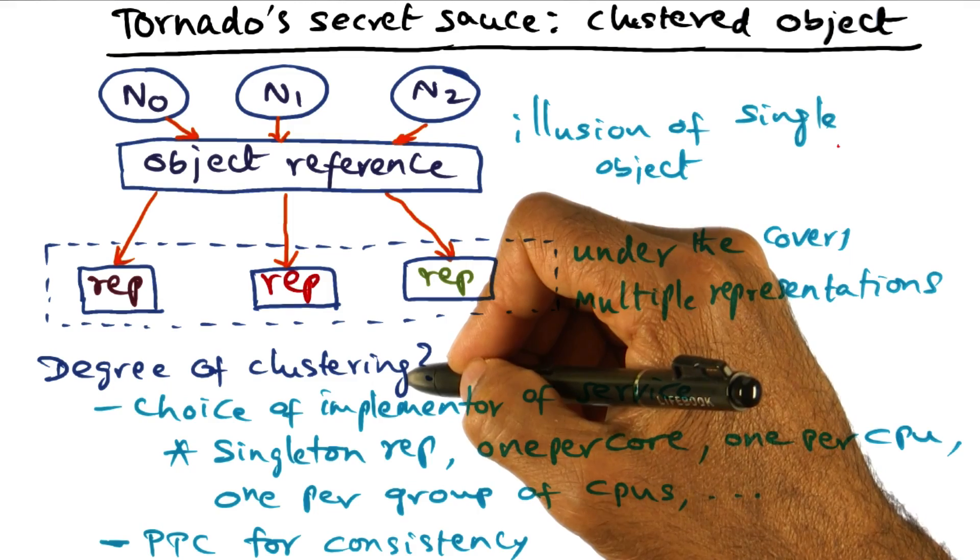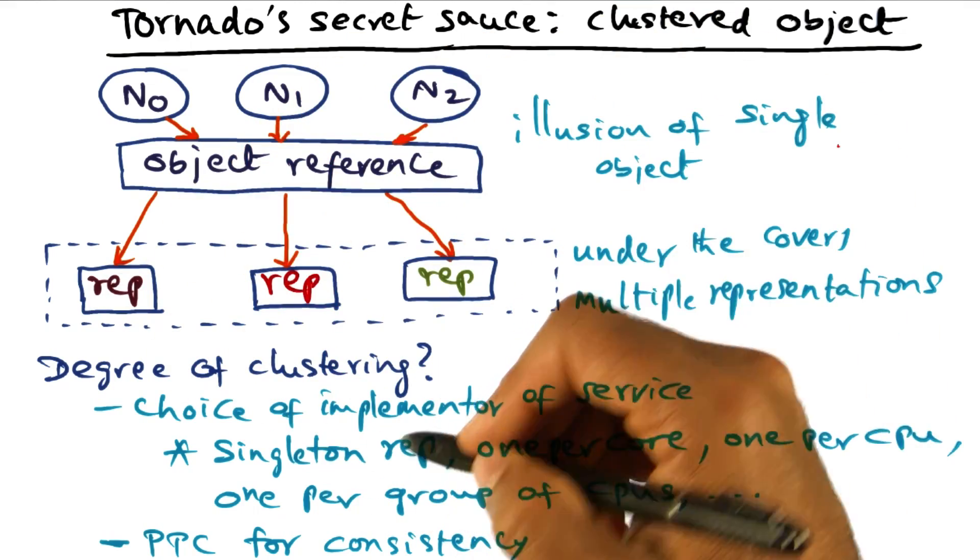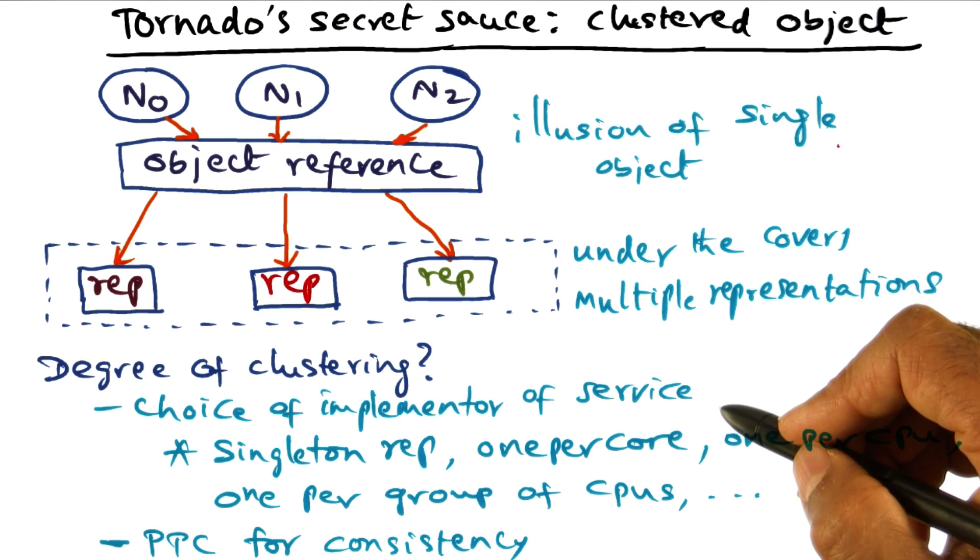The degree of clustering, that is the replication of a particular object, is an implementation choice of the service.